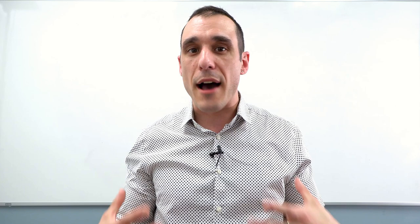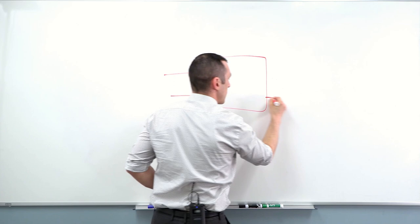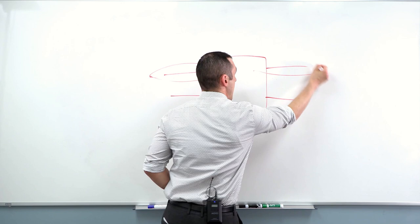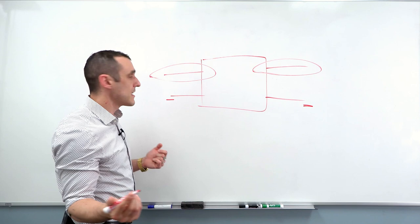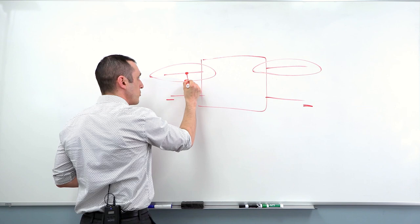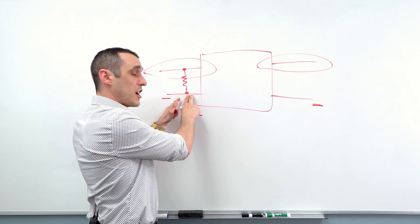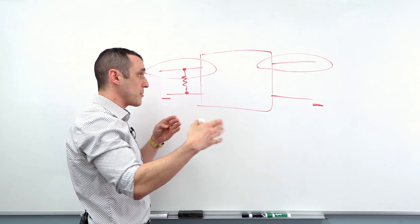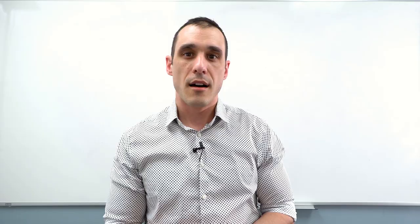We've got another great comment from our new viewer, Yusan. He writes: I still do not understand why the diagram does not actually represent a typical two-port block diagram, where there will be signals on the lower terminals as well. Why is this? This is one of the things that always confused me about S-parameters when I was first learning them. If you look at the typical block for a two-port network, by two ports we really mean this port and this port — these are the ports, but it looks like there are four ports. The reason we always draw it this way is to show that the lower terminals are our reference or negative terminal — essentially our ground plane. It is not meant to show a terminal where a signal enters or exits the network; it's just the ground reference. The actual ports in this hypothetical network are the upper terminals on each side.